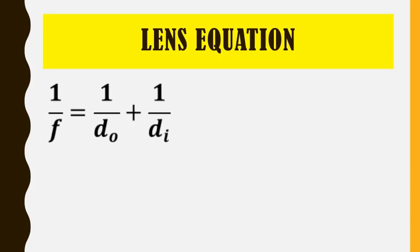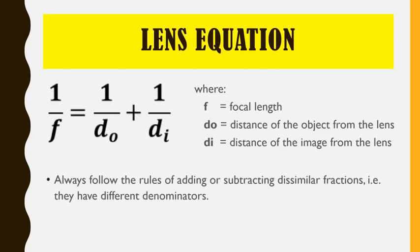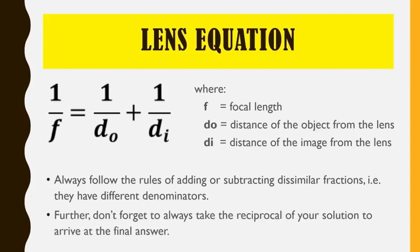The lens equation is similar to our mirror equation. The following variables have the same meaning: F is the focal length, DO is the distance of the object from the lens, and DI is the distance of the image from the lens. Remember to follow the rules of adding or subtracting fractions with different denominators — you always have to determine their LCD before you proceed with your solution. Don't forget to always take the reciprocal of your solution to arrive at the final and correct answer, just as we have been solving problems related to mirrors in the previous video.